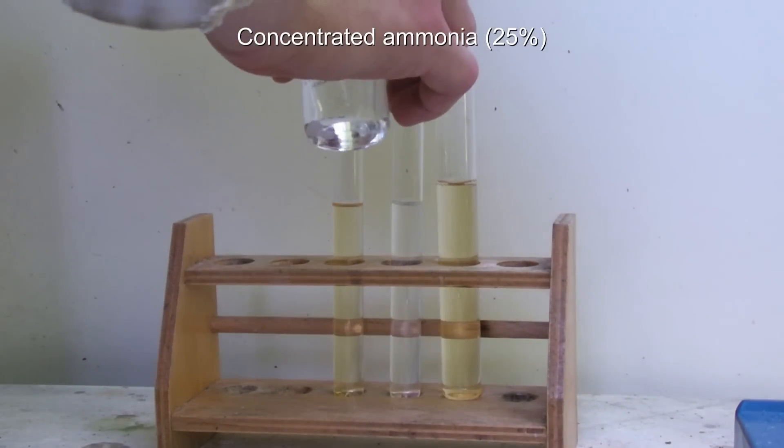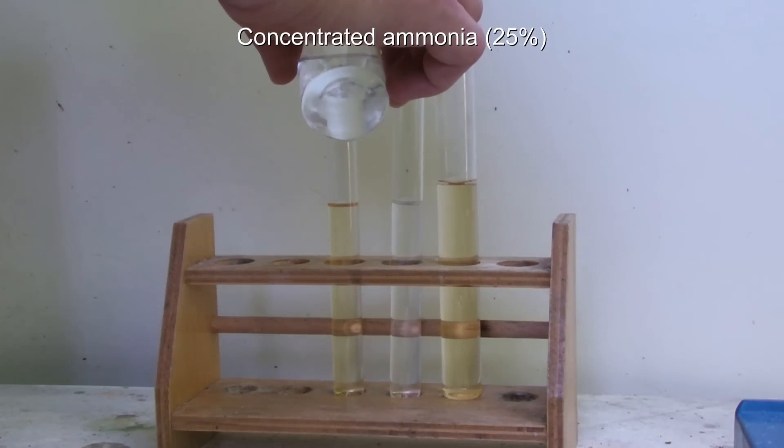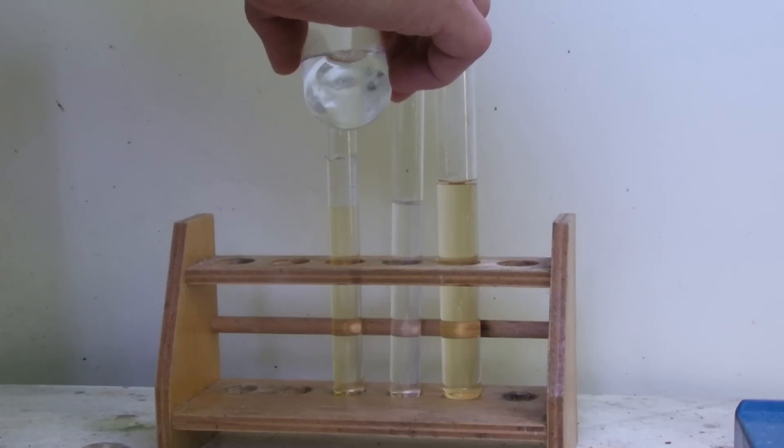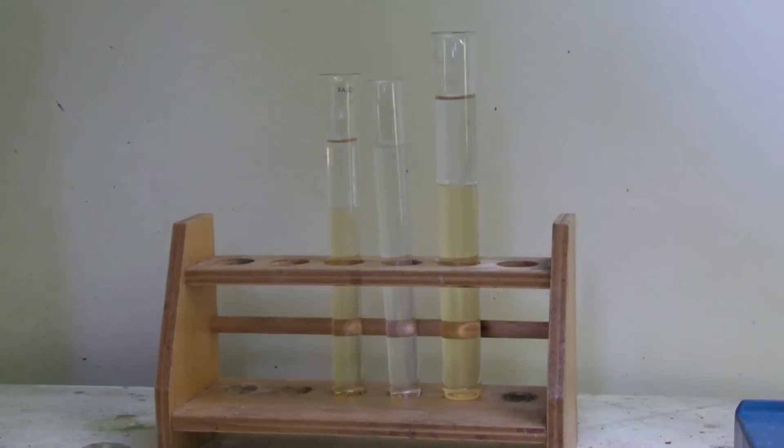Then concentrated ammonia was added on top of the gelatin. After that the test tubes are closed.